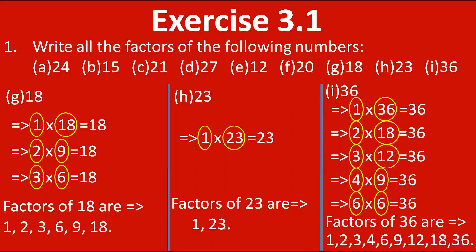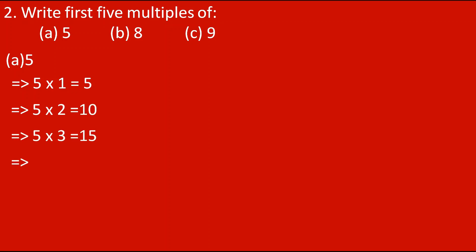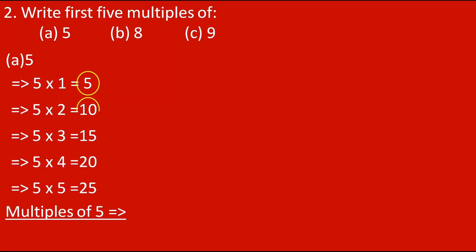Now we will move towards the second question: write the first 5 multiples. Multiples means we multiply the given number by any numbers to get multiples of that number. Here they have told us to find the first 5 multiples, so we start multiplying by 1, 2, 3, 4, 5. First number is 5: 5 ones are 5, 5 twos are 10, 5 threes are 15, 5 fours are 20, 5 fives are 25. So the multiples of 5 are 5, 10, 15, 20, 25.